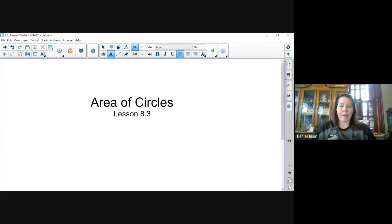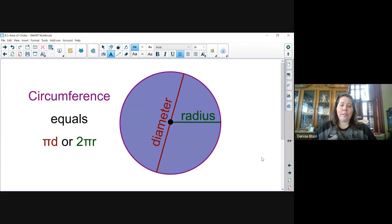Today we're going to talk about area of circles. Before we do that, let's review the parts of the circle. In this diagram, the green line represents the radius. The radius goes from the center of the circle to the outside edge.